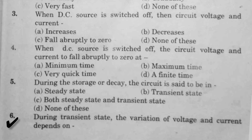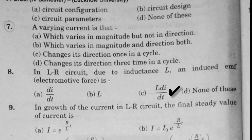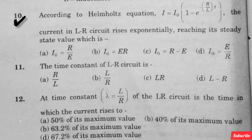During transient state, the variation of voltage and current depends upon — option C is right. The varying current — option A is right. In LR circuit, due to inductance L, the induced EMF (electromotive force) — option C is right. In the growth of current in LR circuit, the final steady value of current is — option C is right. According to Helmholtz equation, I equals I₀(1 − e^(−R/L·t)). The current in LR circuit rises exponentially, reaching its steady state value — option D is right.